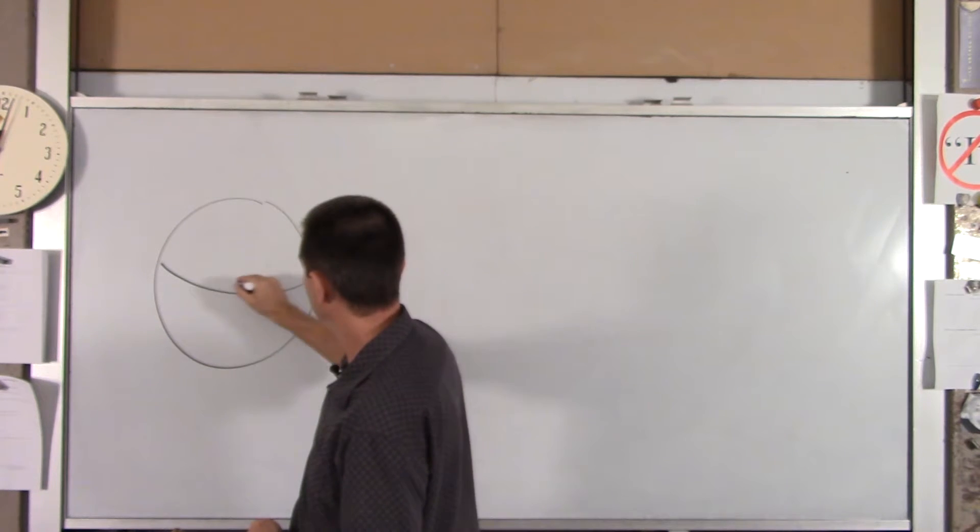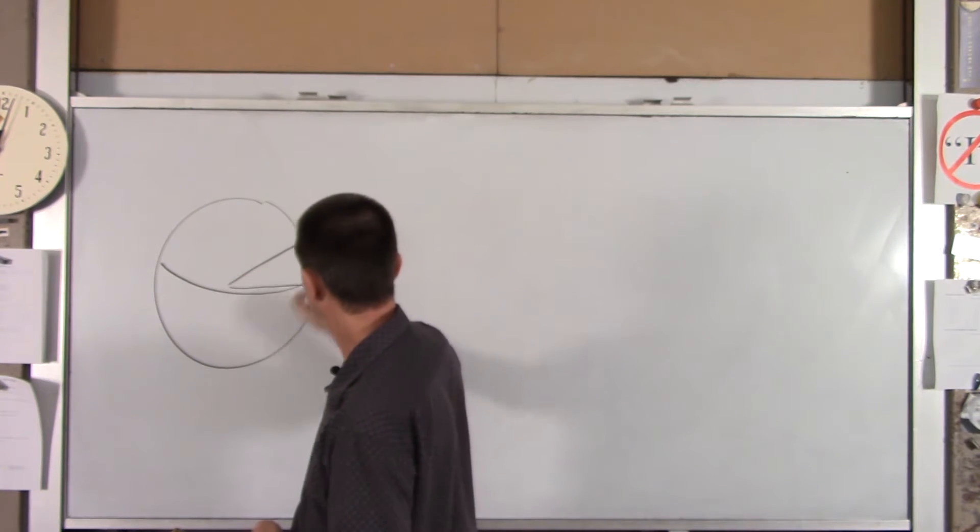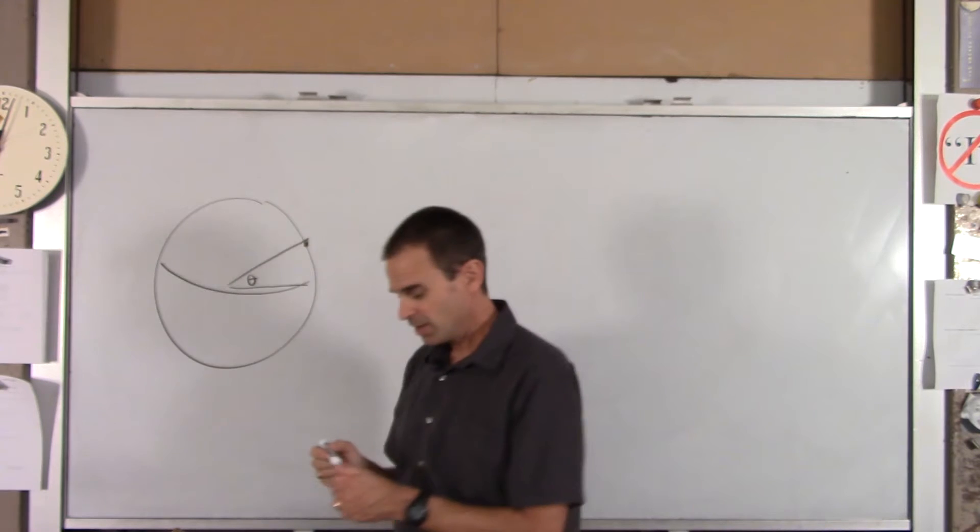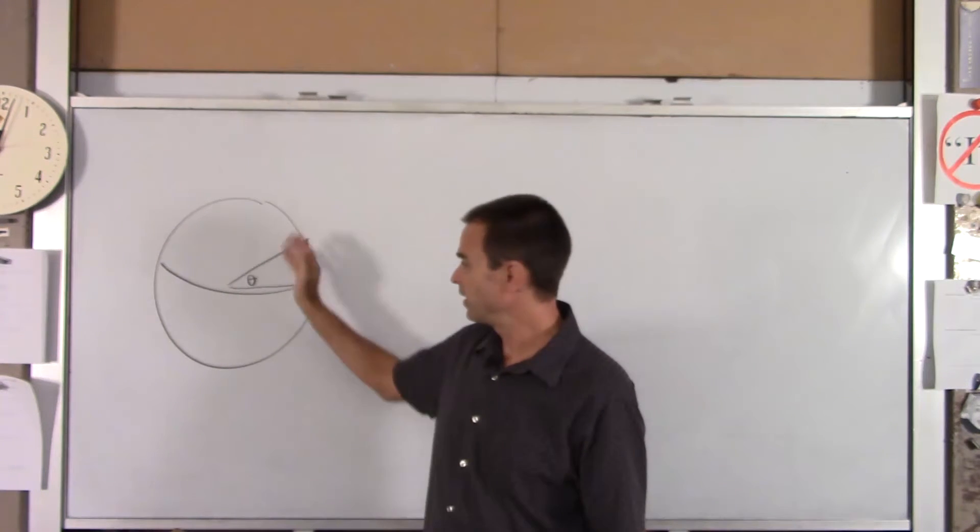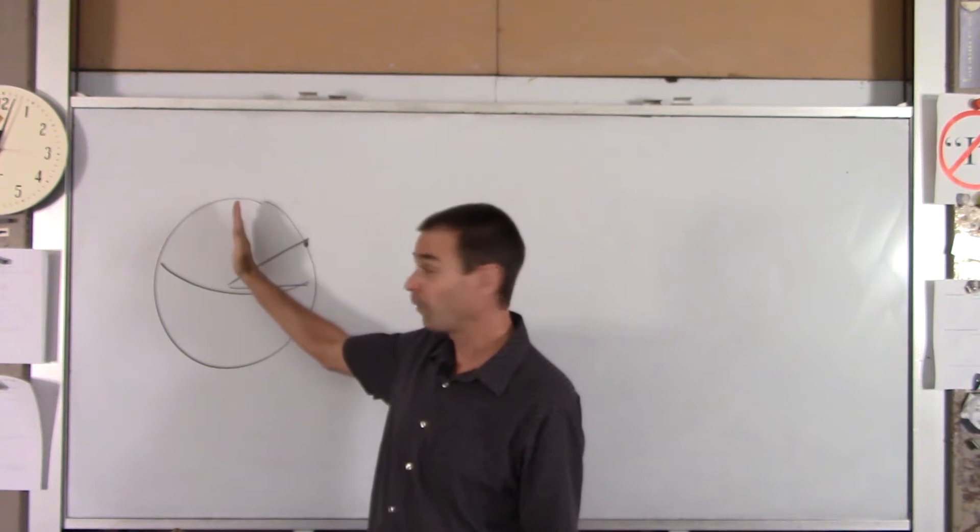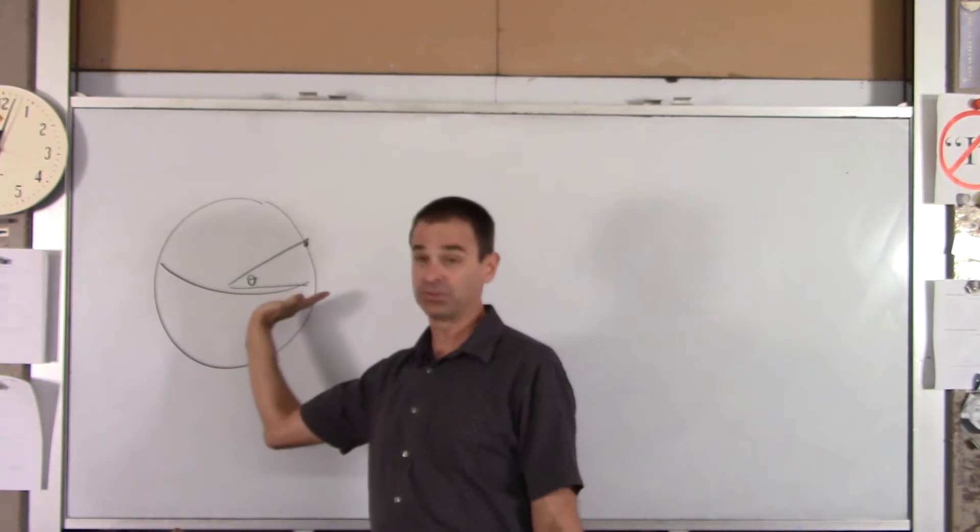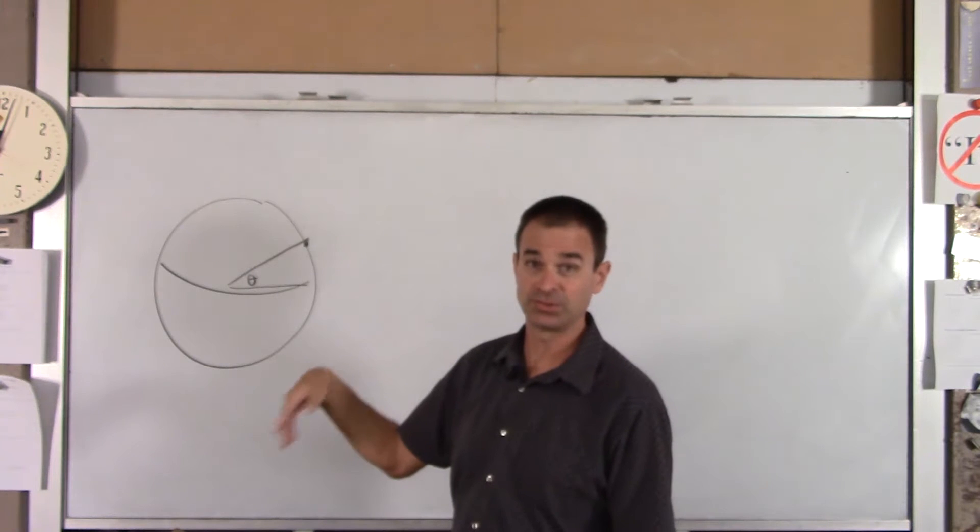A note on latitude. That's simply the angle above the equator that you are. For instance, the North Pole would be 90 degrees. The equator is zero degrees. That's all latitude is. It's just an angle.